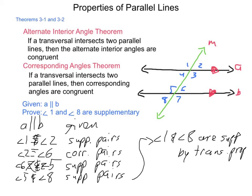We could also have shortened this proof simply by going from angles 1 and 5 being congruent by corresponding angles, then noting that 5 and 8 are supplementary — therefore, 1 and 8 are supplementary to each other. So there are a couple of different ways to approach this proof, some a bit longer than others, but always using the theorems and postulates we started with.